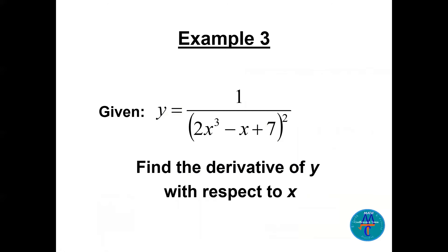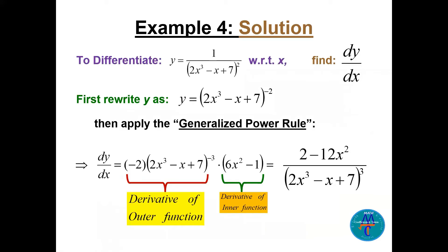Example 3: y = 1/(2x³ − x + 7)². Find dy/dx. We rewrite this as (2x³ − x + 7)^(−2) and apply the generalized power rule.